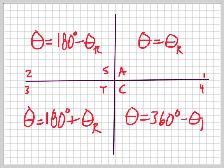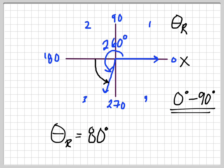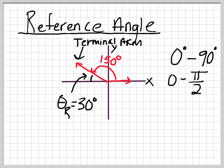Let me just flick back one second. Here's my original reference angle. All you need to remember: your reference angle is the angle between the terminal arm and the x-axis, and it's always between 0 and 90 degrees. I hope this video helps you with your study of trigonometry — best of luck, and I'll see you guys in class.